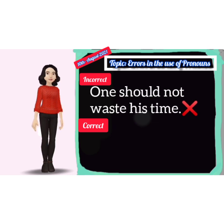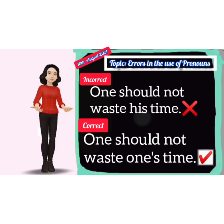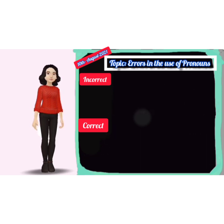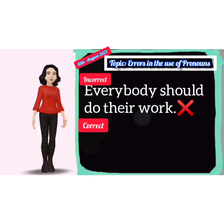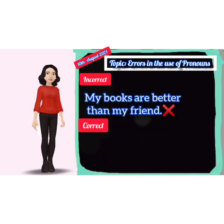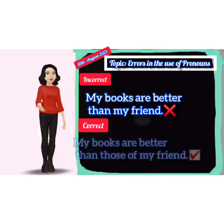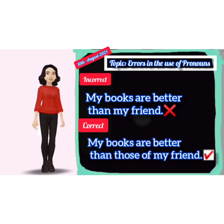Ninth: incorrect — 'One should not waste his time.' Correct — 'One should not waste one's time.' Tenth: incorrect — 'Everybody should do their work.' Correct — 'Everybody should do his work.' Eleventh: incorrect — 'My books are better than my friend.' Correct — 'My books are better than those of my friend.'